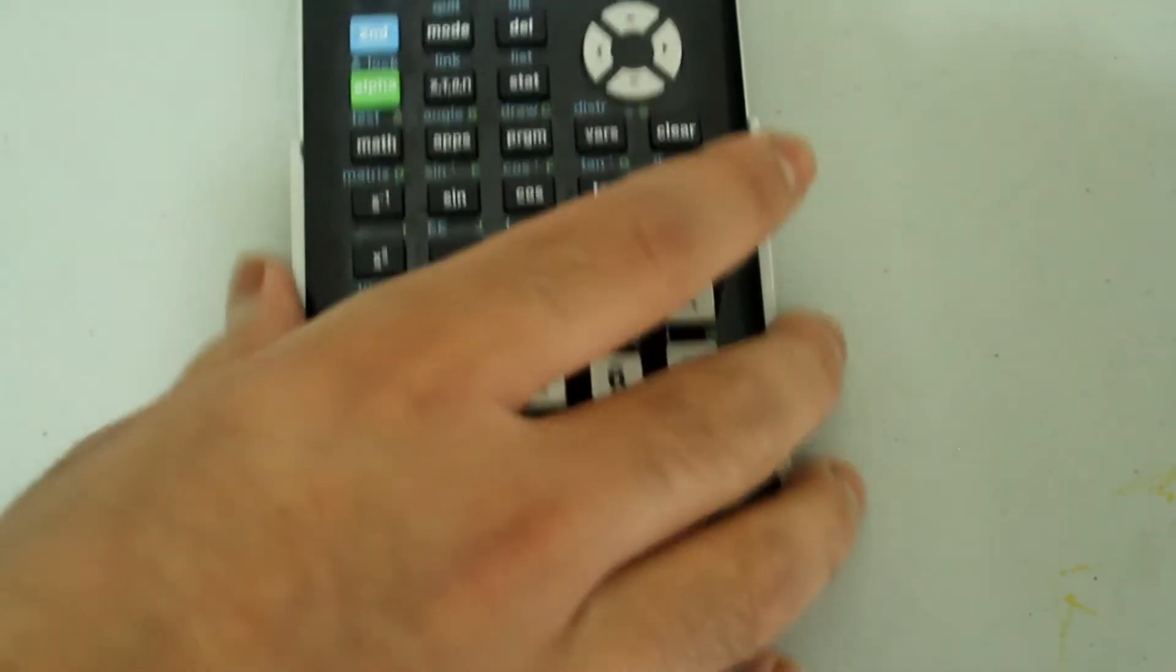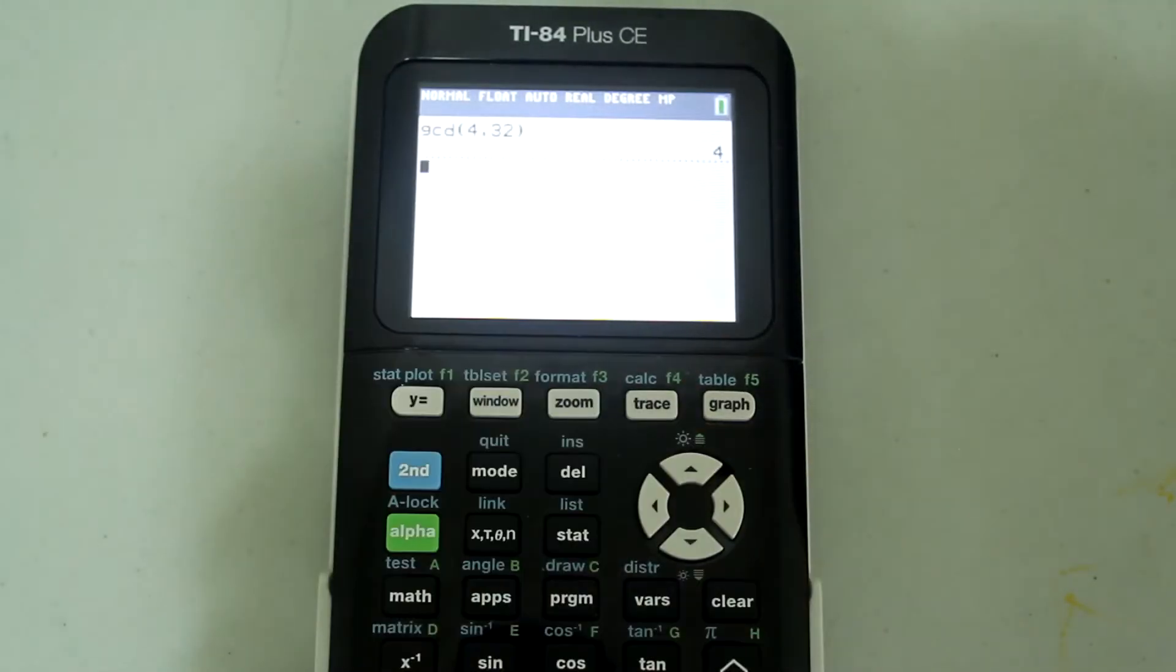And now I'm going to press enter, and I get the greatest common divisor of 4 and 32 as 4.